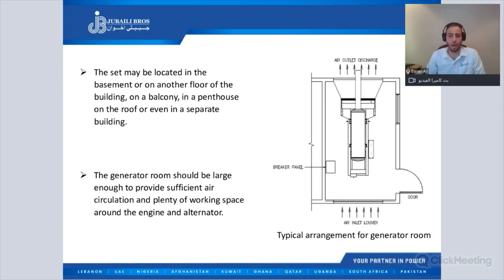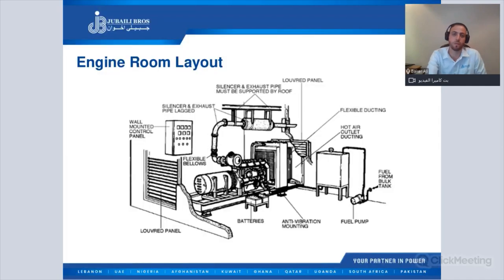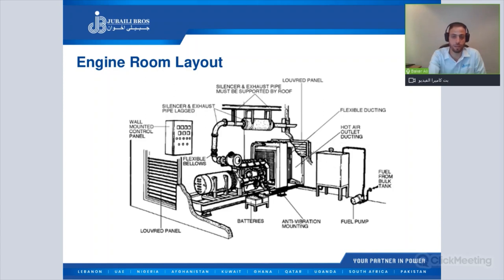In the upcoming slide I will show you the minimum distance you have to keep around the generator. In this engine or generator room layout, you can see the main components: the louver panel for the air inlet, the air outlet louver, the exhaust system and the silencer, the fuel tank, the batteries, and the radiator with the ducting system. We will talk about all of these components in the upcoming slides.